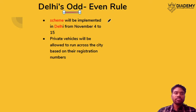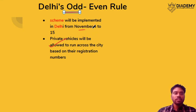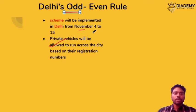Delhi's odd-even scheme operates in months like November and December, when the state government issues notifications that on alternate days either odd-numbered or even-numbered registered vehicles may operate. This is to reduce the vehicle load on roads and lower the amount of carbon dioxide, NOx, and SOx released from vehicles.